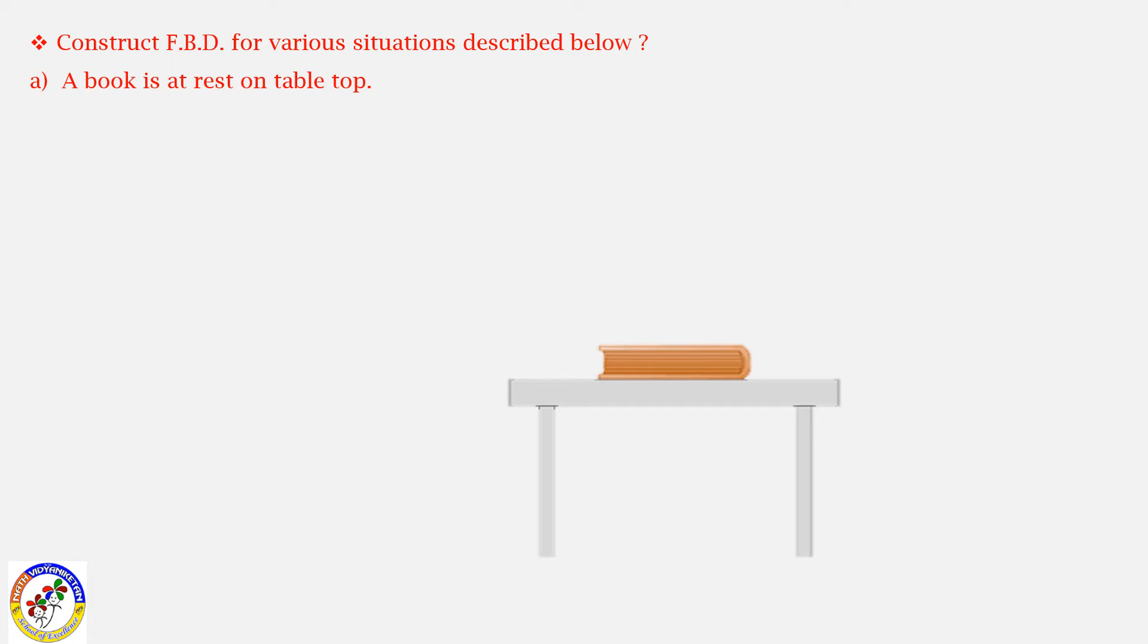Free body diagram for a book at rest on top of the table: Upward direction is the normal force, perpendicular upward. The book also experiences gravitational force downward. Two forces are equal and opposite direction, so net force is zero. The book is also at rest.